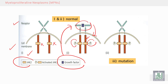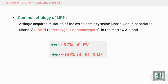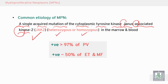However, in an abnormal condition — a mutation of JAK2 — we have activation and phosphorylation of an activated JAK without growth factors. This is called autonomous activation. The common etiology of these disorders is a single acquired mutation of cytoplasmic tyrosine kinase, Janus-associated kinase 2, known as JAK2, either heterozygous or homozygous, in the marrow or in the blood.